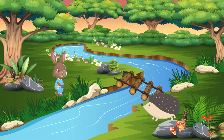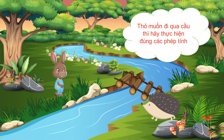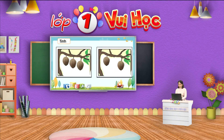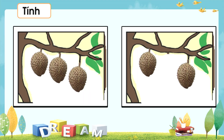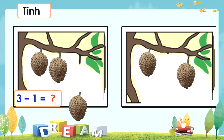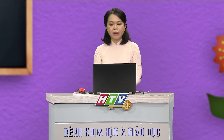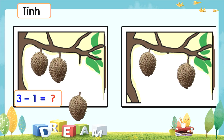Trên hành trình của mình, bạn thỏ đi đến một bờ sông. Bạn thỏ gặp bạn nhím. Bạn nhím nói với bạn thỏ: Thỏ muốn đi qua cầu thì hãy thực hiện đúng các phép tính. Bây giờ mình sẽ giúp đỡ bạn thỏ nhé các em. Các em hãy quan sát bức tranh thứ nhất và thực hiện phép tính. Trên cành cây có ba quả, rơi xuống một quả, còn lại hai quả, cô có phép tính ba trừ một bằng hai.